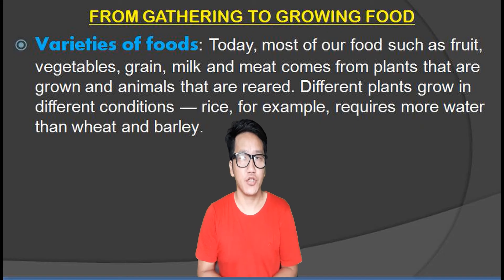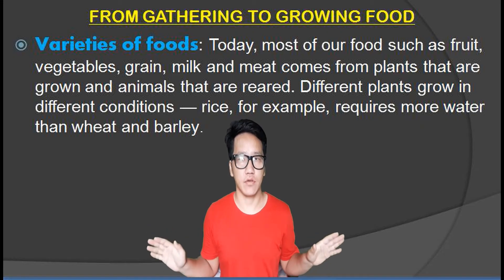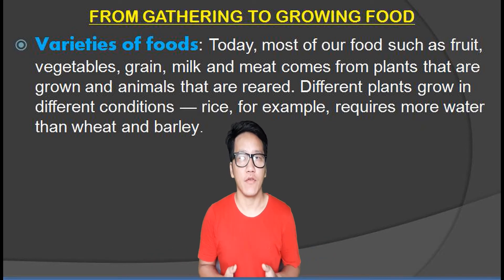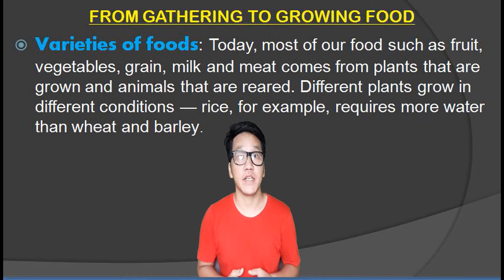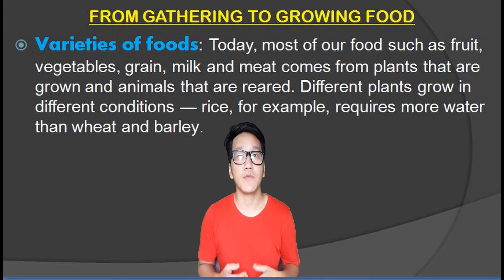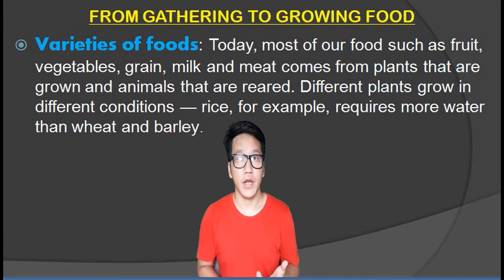Gathering to growing food — Varieties of Foods. Today, most of our food such as fruit, vegetables, grain, milk and meat comes from plants that we have grown and animals that are reared.